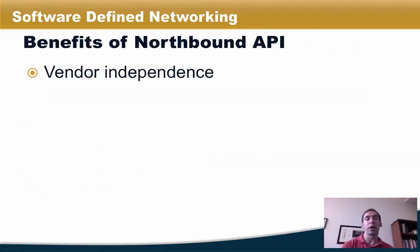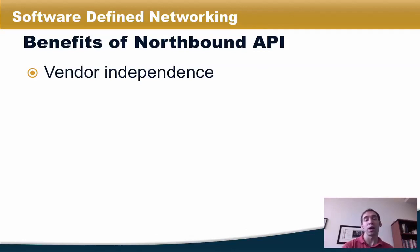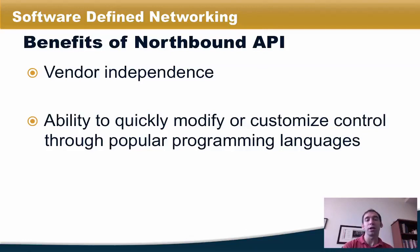A northbound API offers many benefits. One is vendor independence. Different vendors might offer switches or other network devices with different southbound APIs depending on the capabilities of a particular switch or network device. However, agreement on a small number of northbound APIs would allow service providers, operators, and others to develop complex applications that run on a network independent of the switches and network devices actually installed. Another benefit is the ability to quickly modify or customize control using popular programming languages like Python, Java, or Ruby.